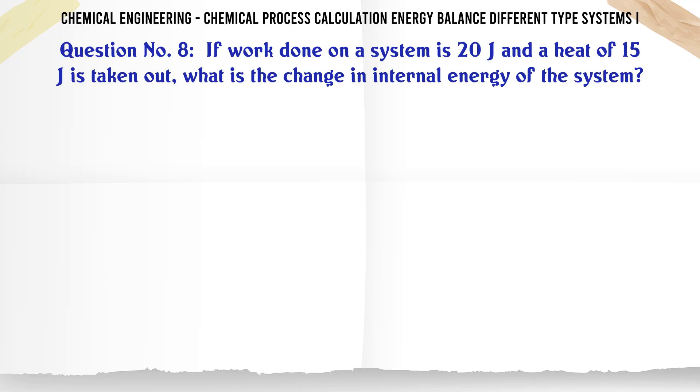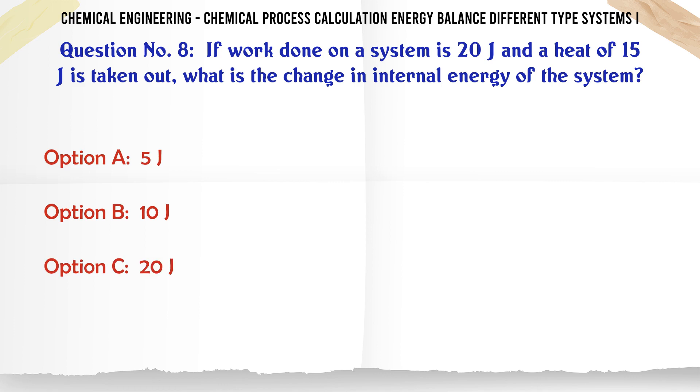If work done on a system is 20J and heat of 15J is taken out, what is the change in internal energy of the system?